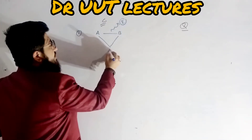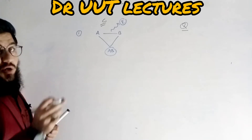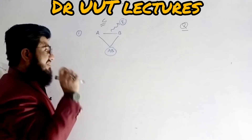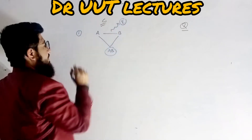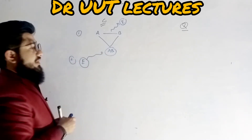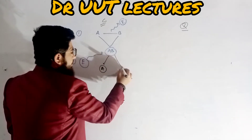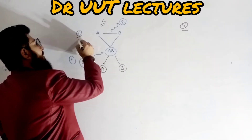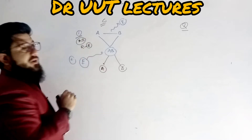Energy is supposed to be released when two things approach or bond together — through a bond, whatever statement you are getting, just keep in mind: when two things are joining together, they are supposed to release energy. This is point number one. Point number two is that if we give energy to the particular molecule that is formed, it will break back into two components.